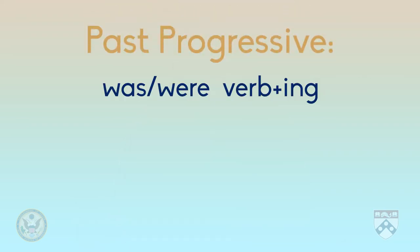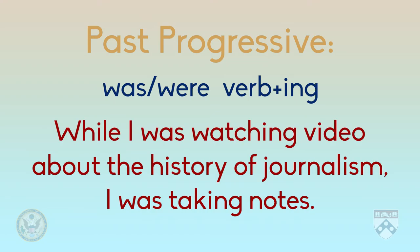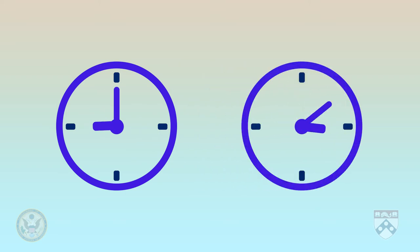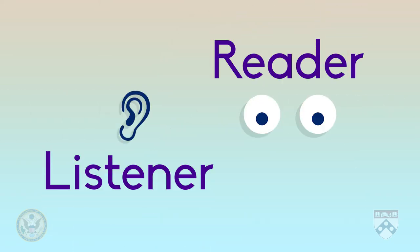Now let's move on to talk about the structure of the past progressive. Similar to the present progressive, the past progressive is formed with either 'was' or 'were' and the -ing form of the verb. For example: while I was watching the video about the history of journalism, I was taking notes. This means that there was a duration — a period of time — when you were watching and taking notes. Similar to the simple past, this is an event that began and ended in the past. But with the past progressive, the audience — the listener or reader — knows that it happened for a longer time, not just a moment.